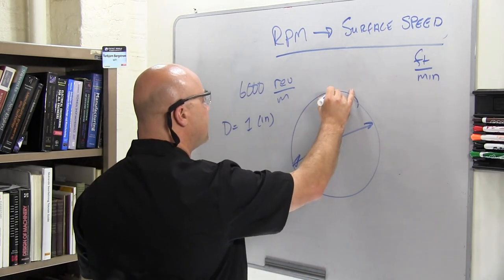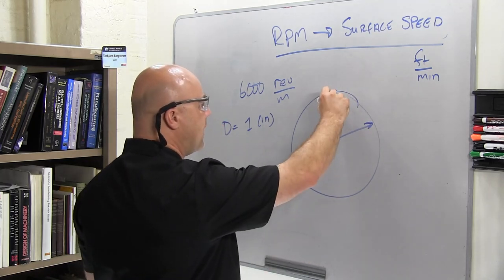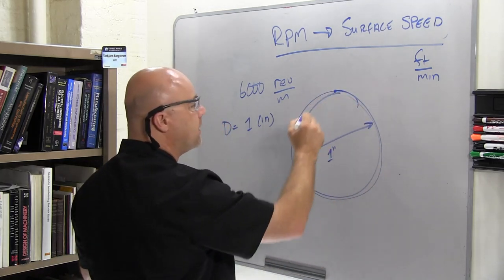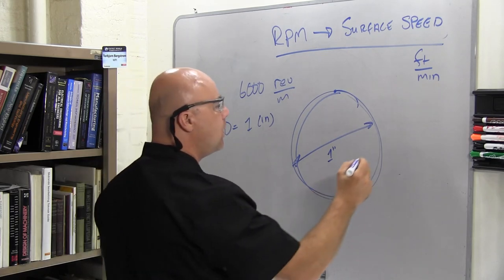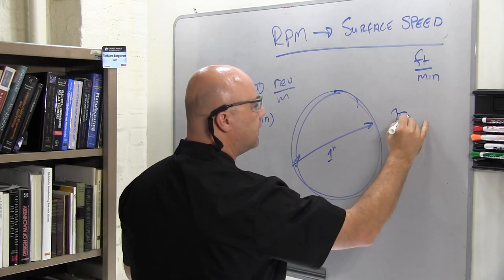So I can figure out inches per revolution pretty simply. That's how far is it to go from here to here. That's the circumference of the part, or pi times the diameter.